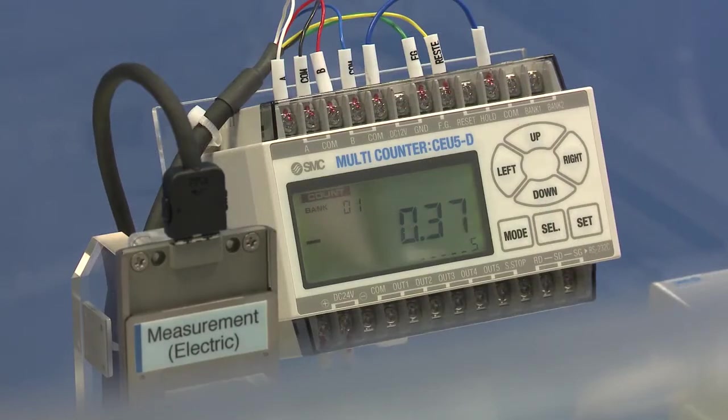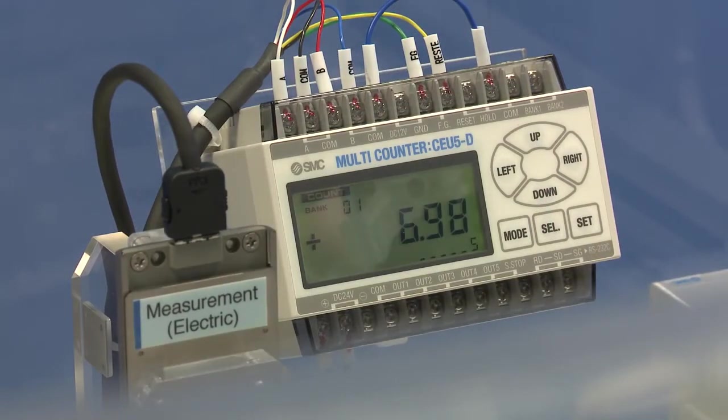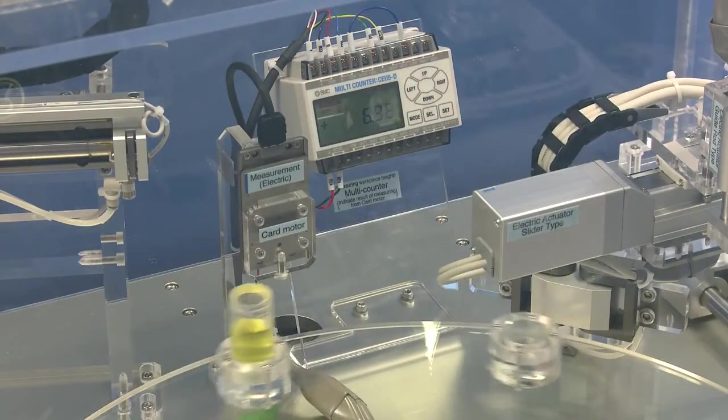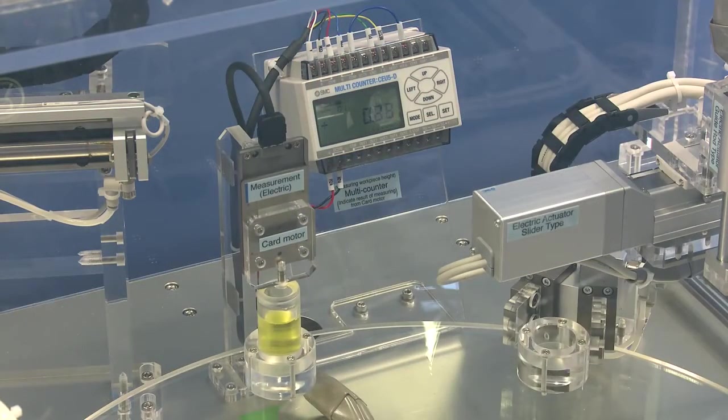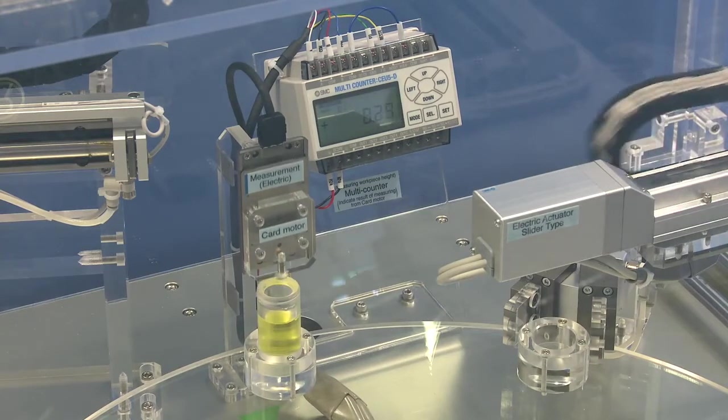Our first station is a measuring system, which is using our LAT card motor. That allows us up to 10 microns of measurement accuracy, and it's fed into our counter here, and that's showing the measurement distance of each product as they go round.